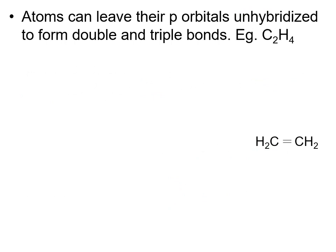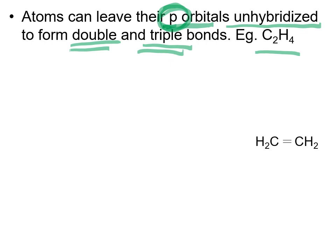To form a double or triple bond we use p orbitals, and those p orbitals must be left unhybridized. So when we see double or triple bonds, we need to leave some p orbitals unhybridized. For a double bond we need one unhybridized p orbital; for a triple bond we need two unhybridized p orbitals. Imagine carbon in C₂H₄: if we need a double bond, we must preserve one p orbital as unhybridized in order to form that pi bond.